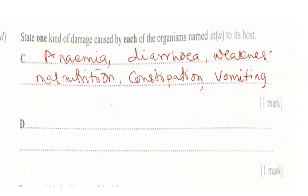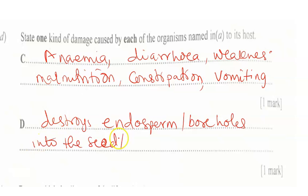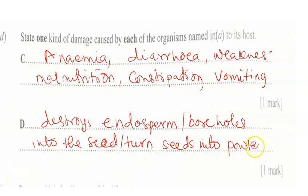Now for organism D, which is weevil — the main damage it causes to farm products includes destroying the endosperm of the seed, boring holes into the seed, or turning the seed into powder. For example, by the time you get to stored maize, the seeds may have been turned into powder. Any one of these will earn you one mark.